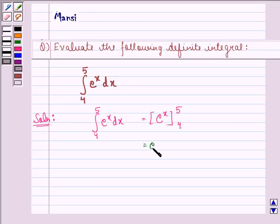So we will have e raised to power 5 minus e raised to power 4, that is equal to e raised to power 4 into e minus 1.